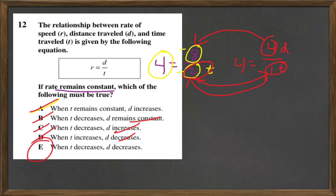So we're left with E. When T decreases, so when T went from this 2 over to 1, it decreased. And when D went from 8 to 4, it decreased. So E is the answer.